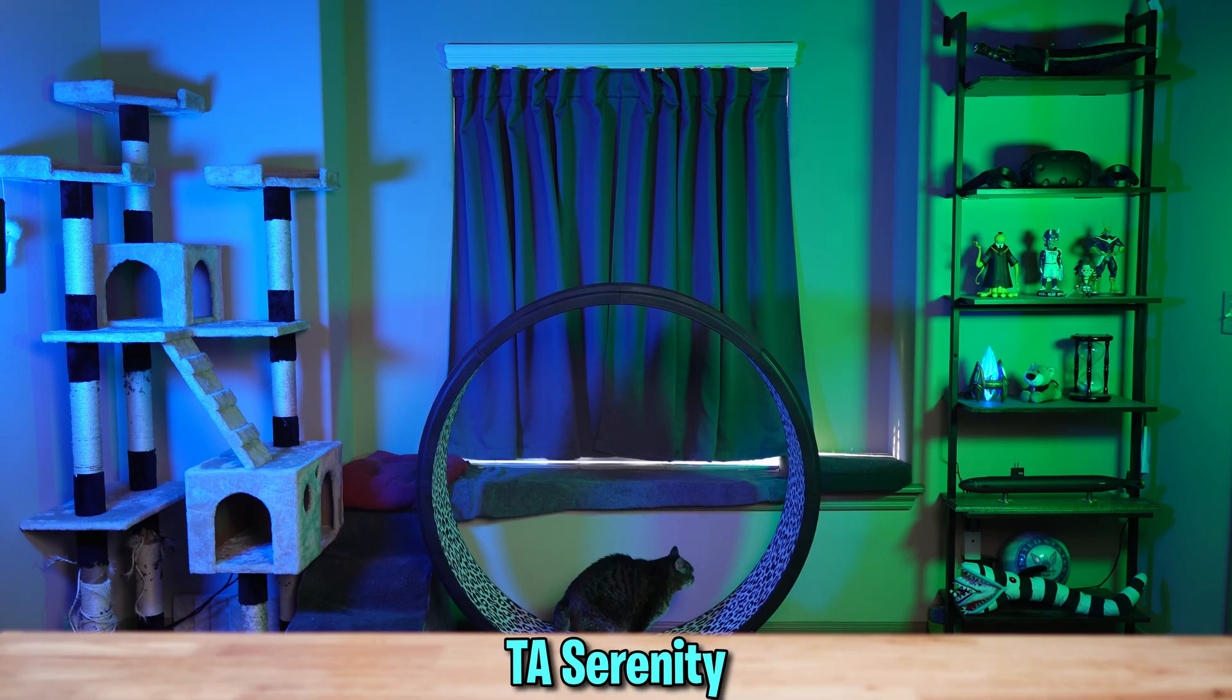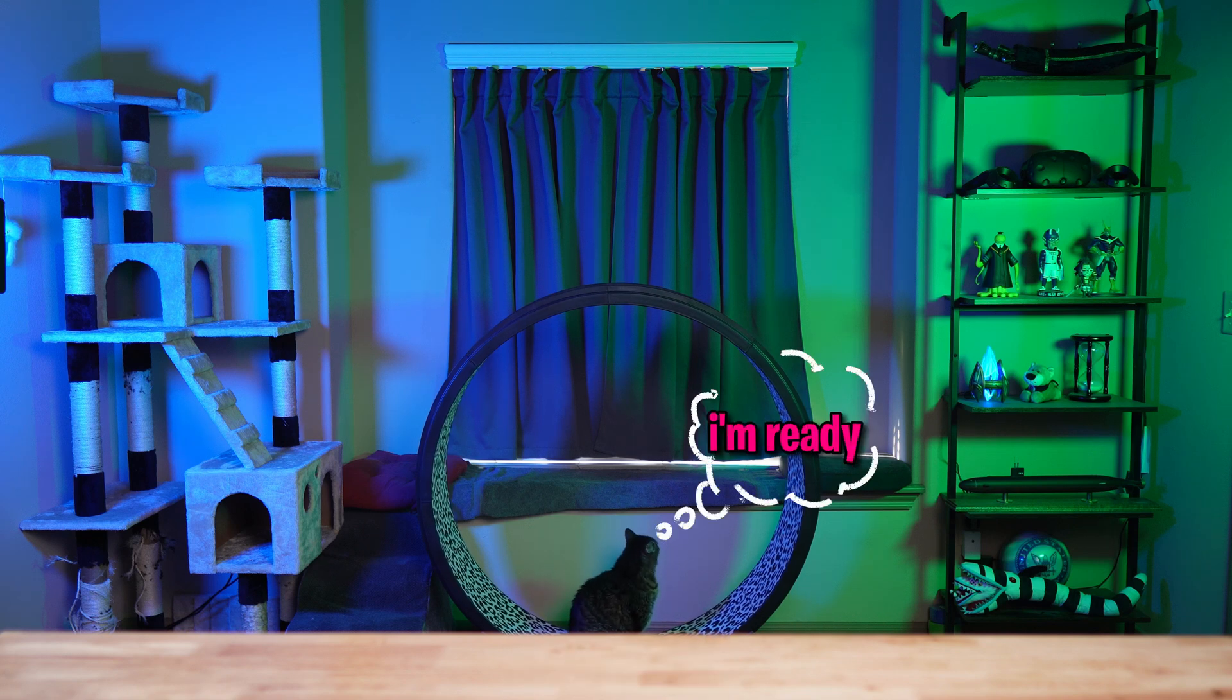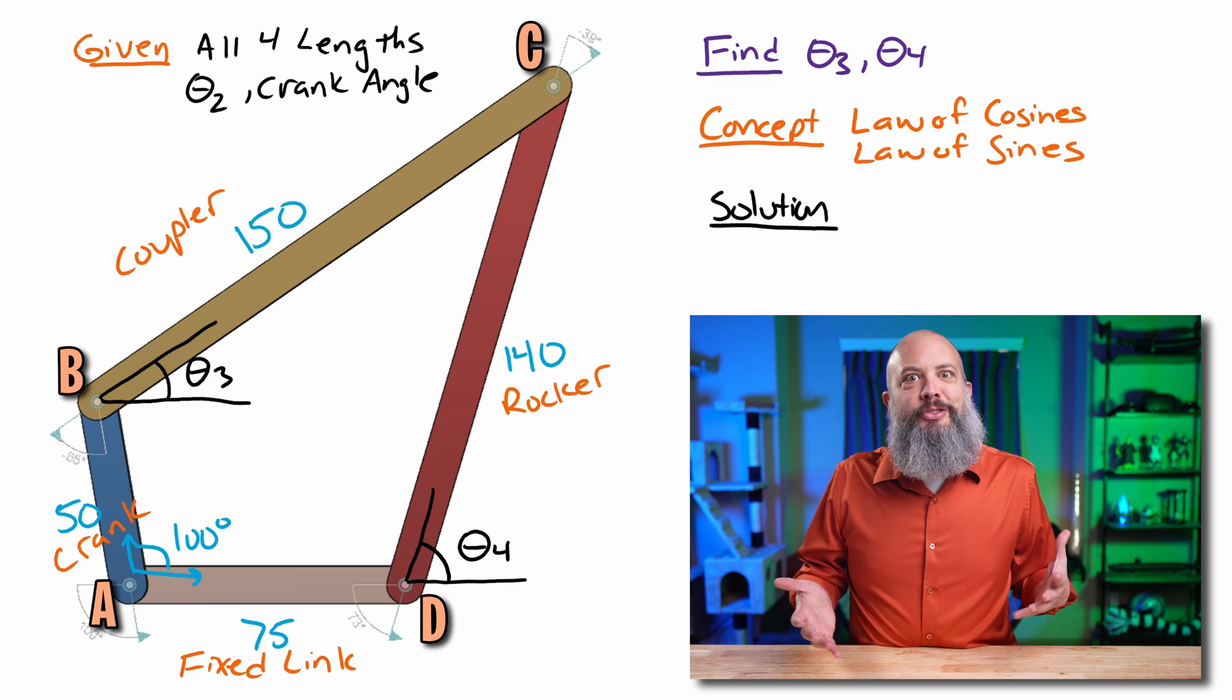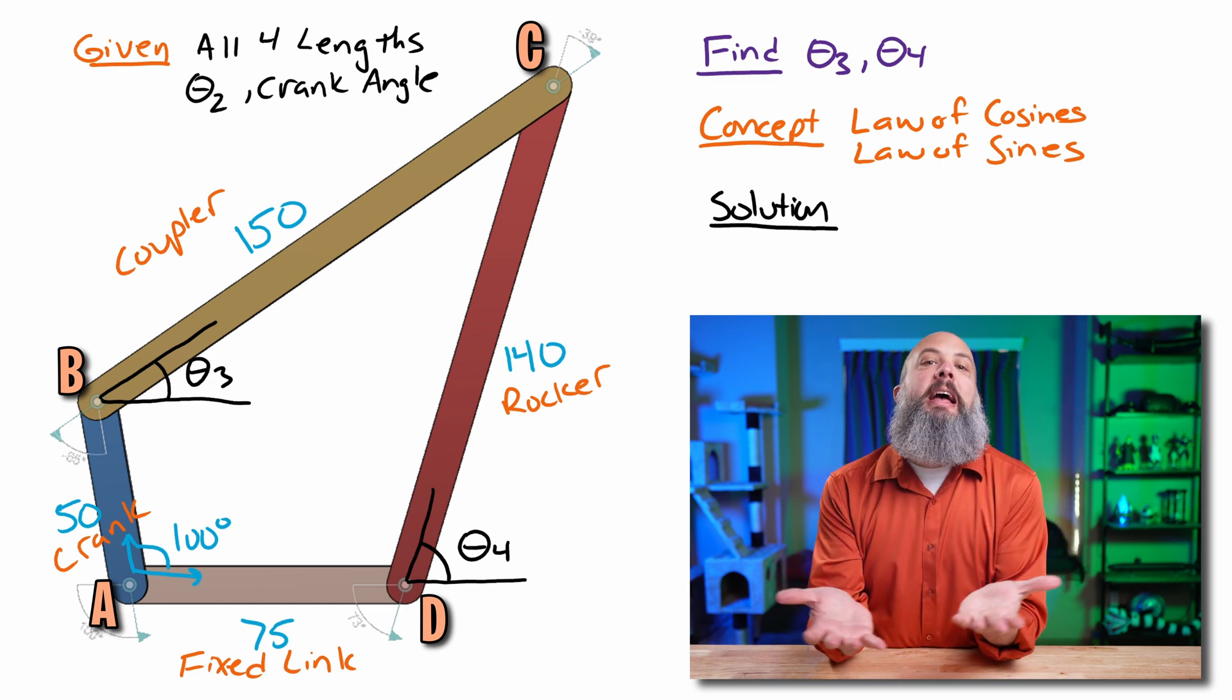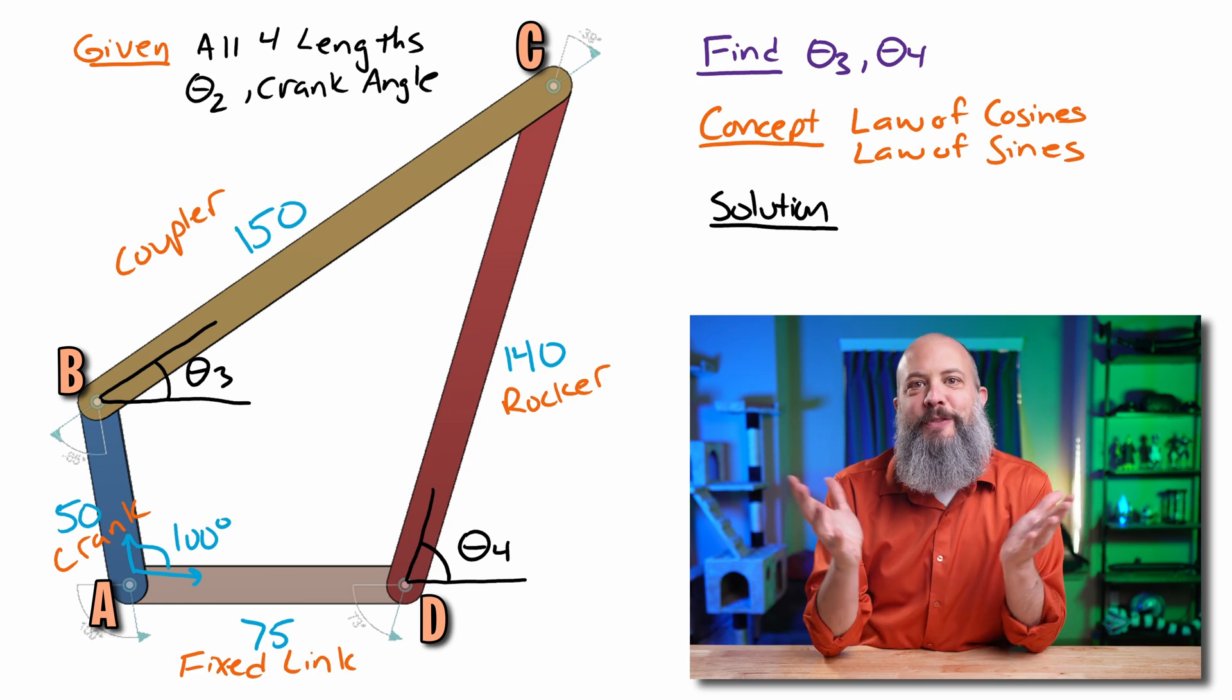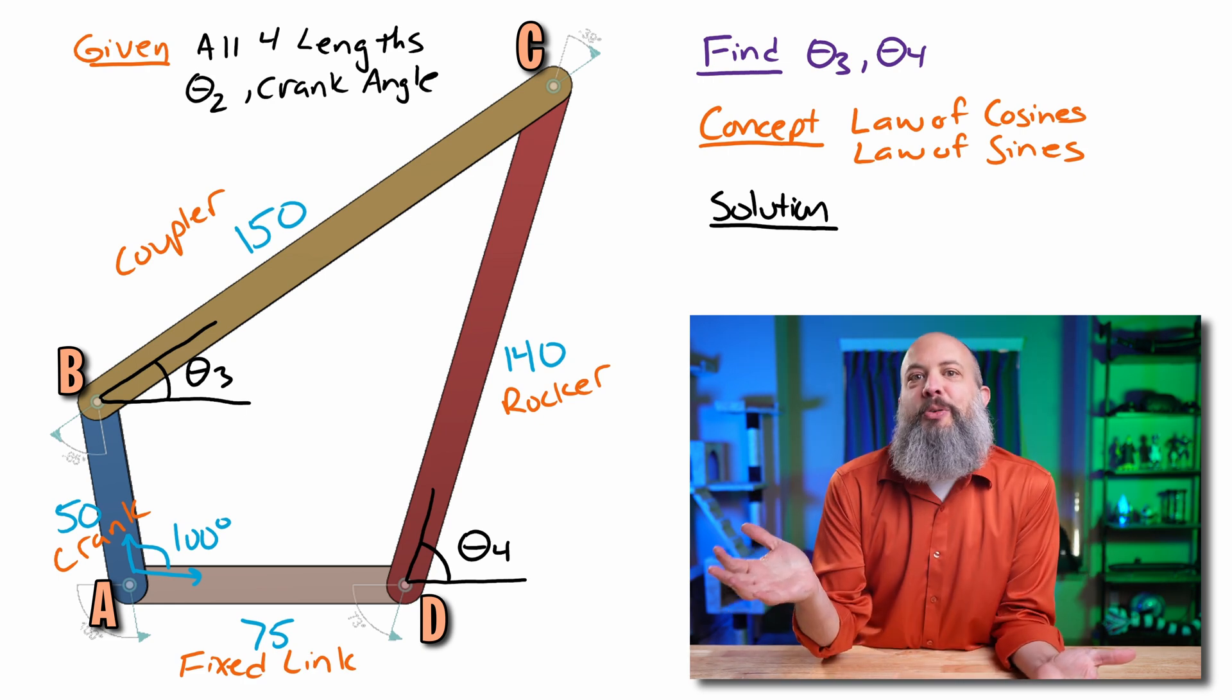And to make it easier to follow along, your TAs, Indiana and Serenity, are going to be here to help you out every step of the way. A student's first instinct is always to solve for the interior angles of a four-bar linkage, because those are the ones that are clearly visible, and sometimes those are important.